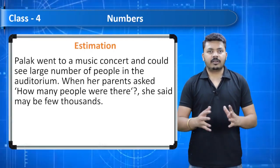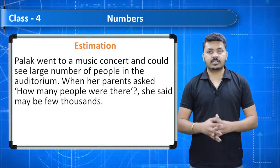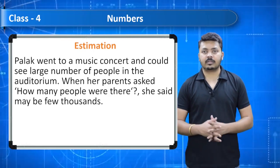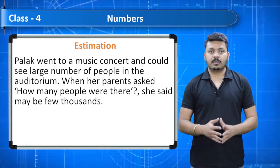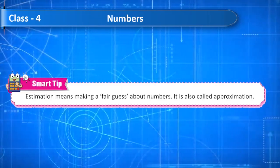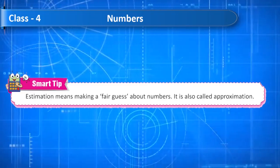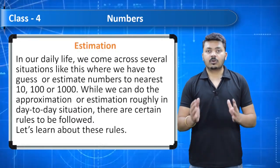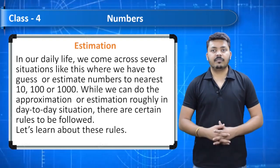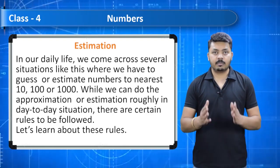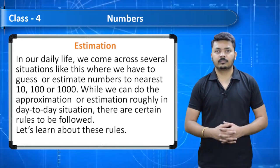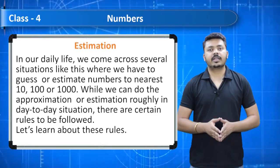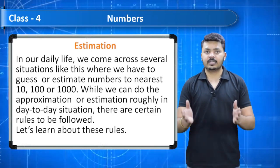Estimation: Palak went to a music concert and could see a large number of people in the auditorium. When her parents asked how many people were there, she said maybe a few thousands. Estimation means making a fair guess about numbers — it is also called approximation. In daily life we estimate numbers to the nearest ten, hundred, or thousand. There are certain rules to be followed.